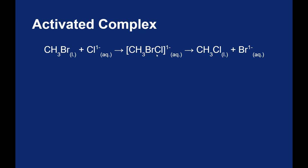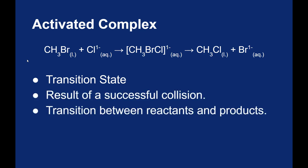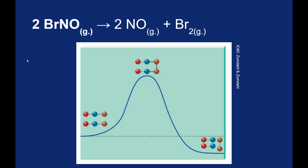Hopefully, it'll break apart and form the products that we want, but it could also stabilize itself by going back into its original reactants. It's a transition state from your reactants to your products. If you have a successful collision, you will generate an activated complex. So here's that earlier example we use of the BrNO molecules decomposing to form NO and Br2.